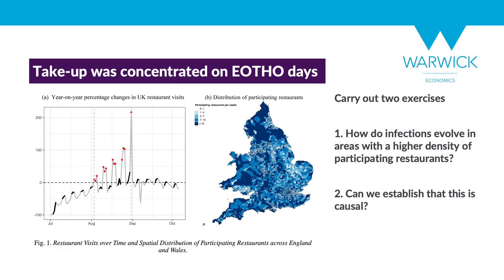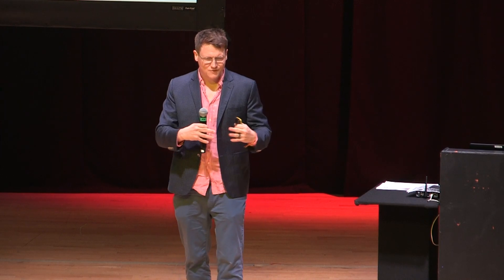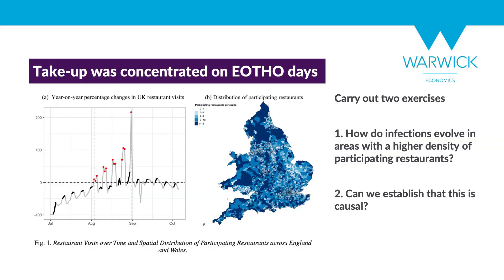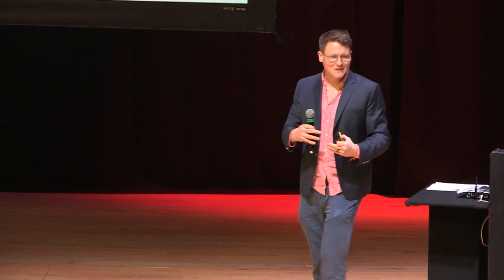Looking at what the data says about the scheme: on the left figure we see year-on-year changes in restaurant bookings over that period. The red dots are the Eat Out to Help Out days — Mondays, Tuesdays, Wednesdays — and there's a massive increase in uptake with people packing into restaurants. You also see that restaurant visits were already normalizing before the scheme and that people shifted dining from weekends to earlier in the week when the discount was available. It's a rational response to shift consumption inter-temporally when Monday–Wednesday eating out is cheaper.